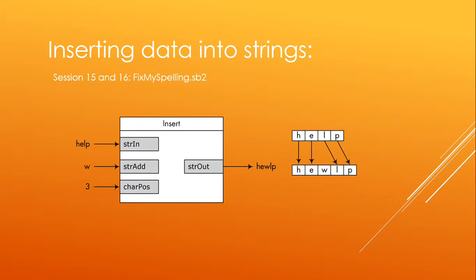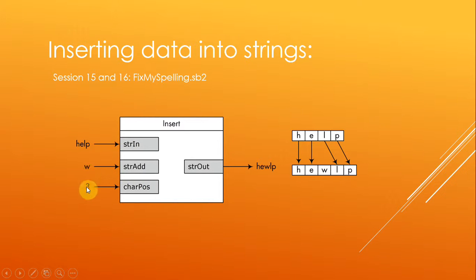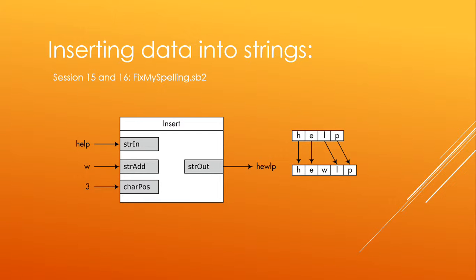Now this is a more advanced function — also on sessions 15 and 16 — called Fix My Spelling. This is an example of where you start off with a string and you want to insert a character or a string in the middle of that string. In this specific case, you give the word 'help' as your start string, you want to add the letter W to position 3, and get the answer out. So we start off with 'help', go to position 1 to add W, and we get the word 'hewlp' essentially.